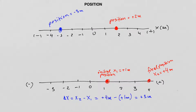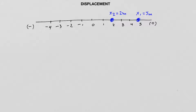In terms of this example, the displacement is x2 minus x1, which is plus 4 meters minus plus 1 meter, giving positive 3 meters. Now let's look at another example: a particle at initial position 5 meters moves to position x2 of 2 meters from the origin. The displacement is 2 meters minus 5 meters, which is negative 3 meters.